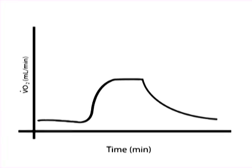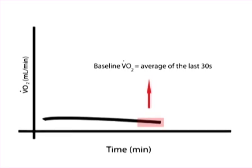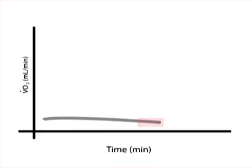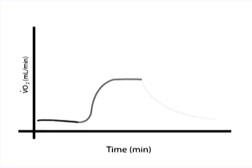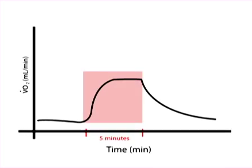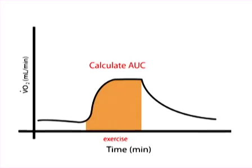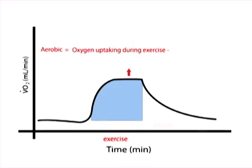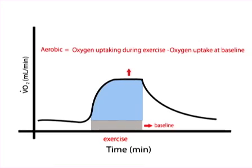To calculate the contribution of the aerobic metabolism to the total energy spent during exercise, first determine the baseline or rest value for oxygen consumption by calculating the average of the last 30 seconds of the curve. Then multiply the value obtained by the total time of exercise — for example, if the exercise duration was 5 minutes, multiply the rest oxygen consumption by 5. Determine total oxygen consumption during exercise by calculating the area under the curve using the trapezoidal method. Finally, subtract the baseline oxygen consumption from the exercise oxygen consumption.